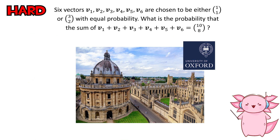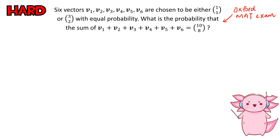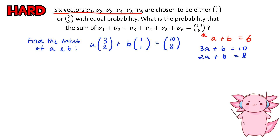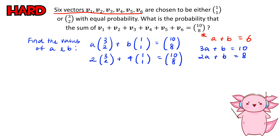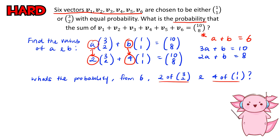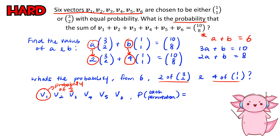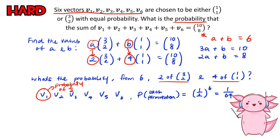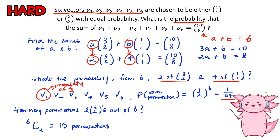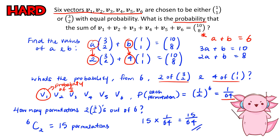Are you smart enough to get into Oxford? This question is from the Oxford Maths Admissions Test. The first step is to find a combination of two vectors that add up to (10, 8), where a and b add up to 6. After trial and error, a equals 2 and b equals 4 gives the vector (10, 8). Each vector has a probability of ½, so each unique permutation of 6 vectors has probability (½)^6 = 1/64. Using 6 choose 2, there are 15 unique permutations where 2 of this vector appear. The final probability is 15 over 64.